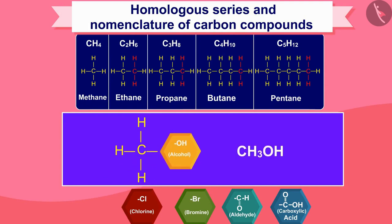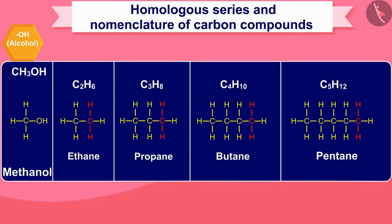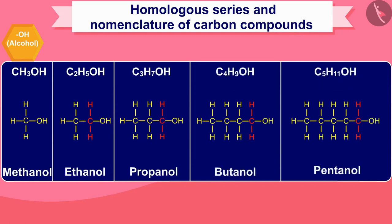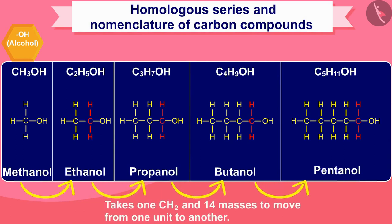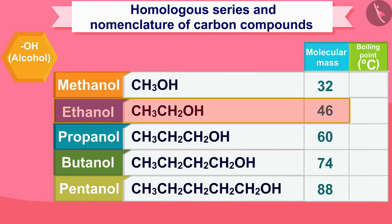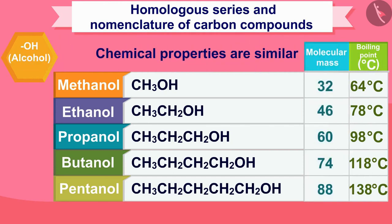Similarly, you can form homologous categories by placing different functional groups in hydrocarbon groups. A series of compounds in which the same functional group substitutes for hydrogen in a carbon chain is called a homologous series. The most important point is that it takes 1 CH2 and 14 mass units to move from one unit to another. When molecular mass increases in a homologous series, there is a gradation in physical properties — the melting point and boiling point increase as molecular mass increases. The chemical properties ensured by a functional group remain the same in the homologous series.